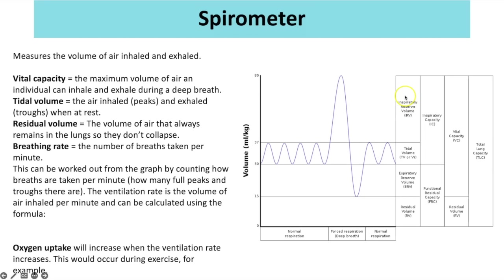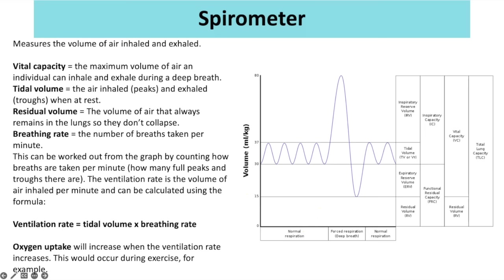Vital capacity is the maximum volume of air an individual can inhale and exhale during a deep breath. Tidal volume is the air inhaled and exhaled when at rest. Residual volume is the volume of air that always remains in the lungs so they don't fully empty and collapse. Breathing rate can be worked out from the graph by counting repeating patterns — peaks per minute — and ventilation rate is tidal volume multiplied by breathing rate.